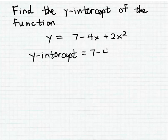So we get 7 - 4(0) + 2(0)², and of course these last two terms are going to disappear because they both contain a factor of zero, and so we just get that the y-intercept of this function is 7.